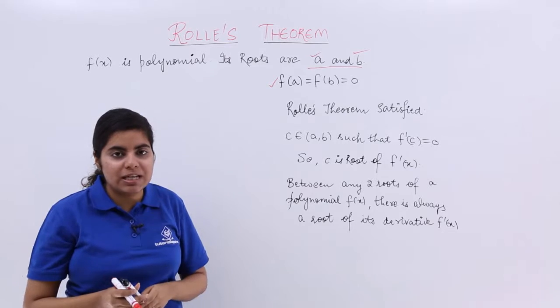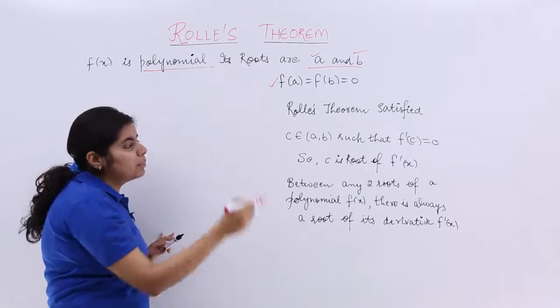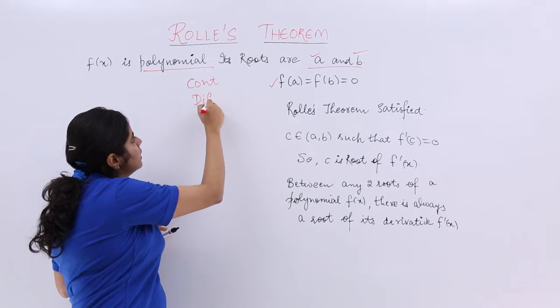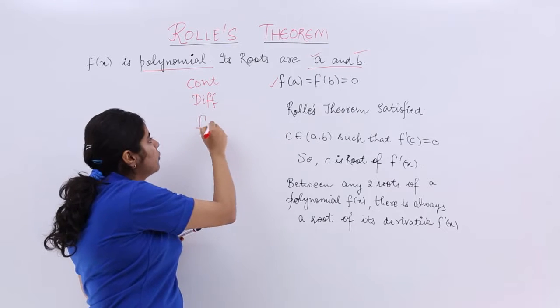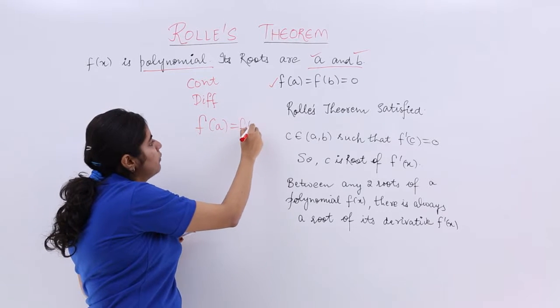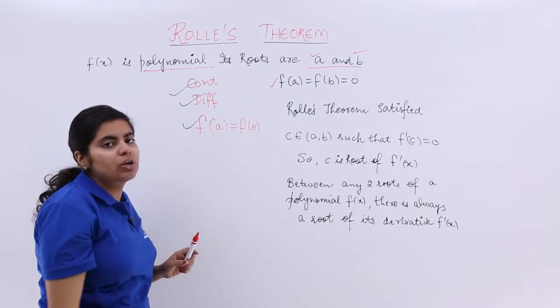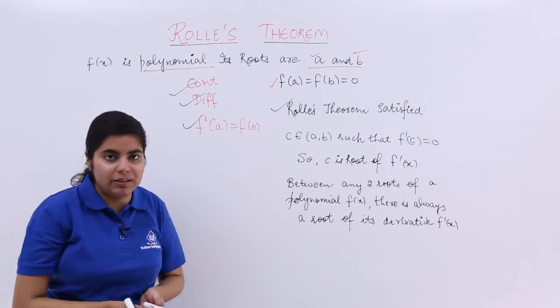So when these three conditions are satisfied: the polynomial function is continuous, the polynomial function is differentiable as we studied in previous videos, and the third condition of Rolle's theorem is f(a) should equal f(b), which we have already seen. So all three conditions of Rolle's theorem are satisfied. Till here I have done that.